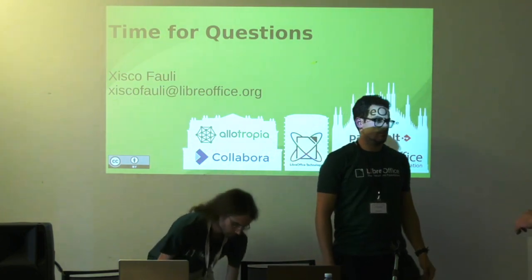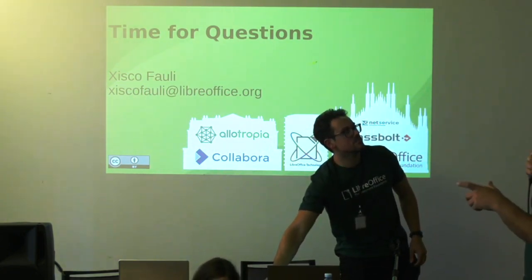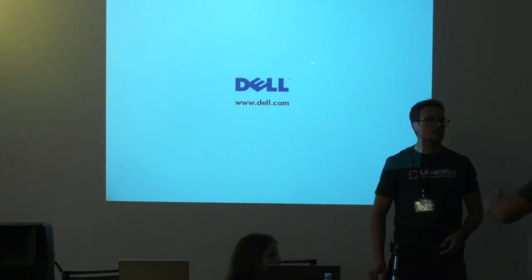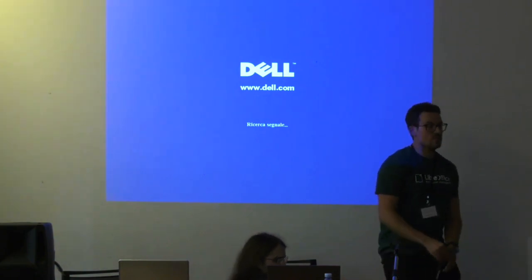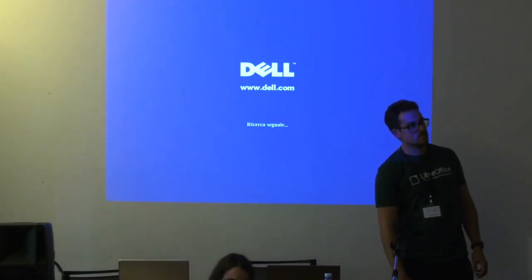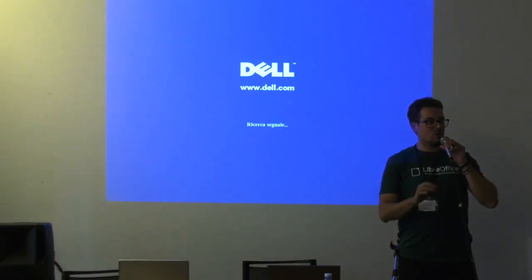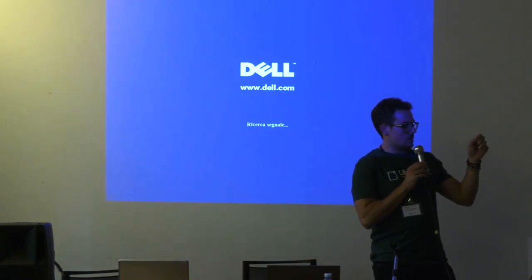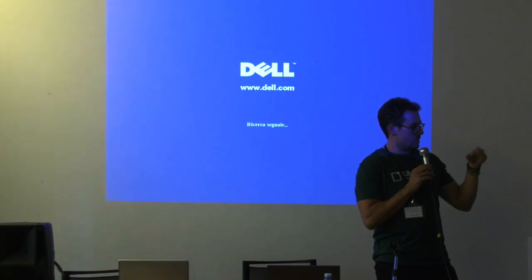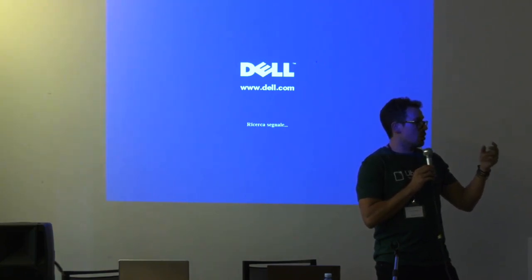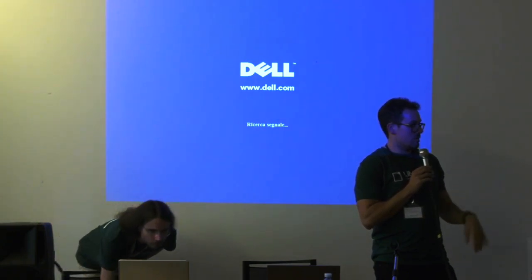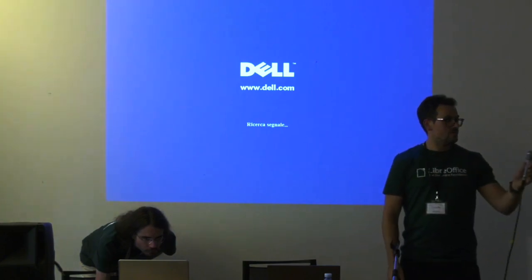Question: you mentioned you should add the TDF hashtag of the bug when you create a unit test — where exactly on Bugzilla? Answer: you do it in the git commit message. Once the test is pushed to master, the Bugzilla ticket will get a comment with a notification that there is a new commit related to the ticket, and the next time the script runs, the bug is gone from the list.